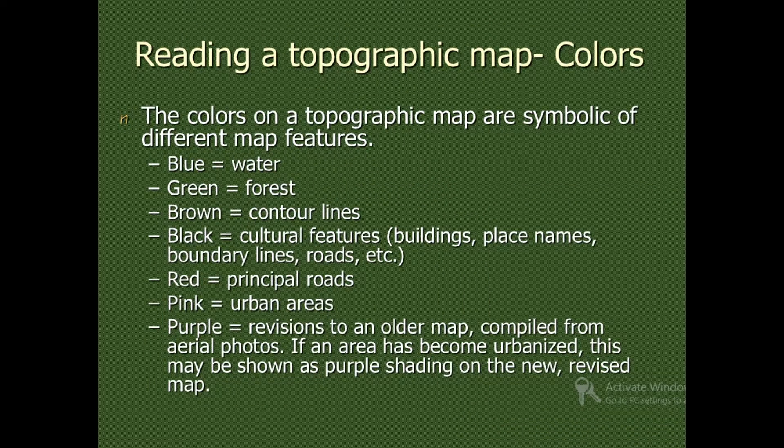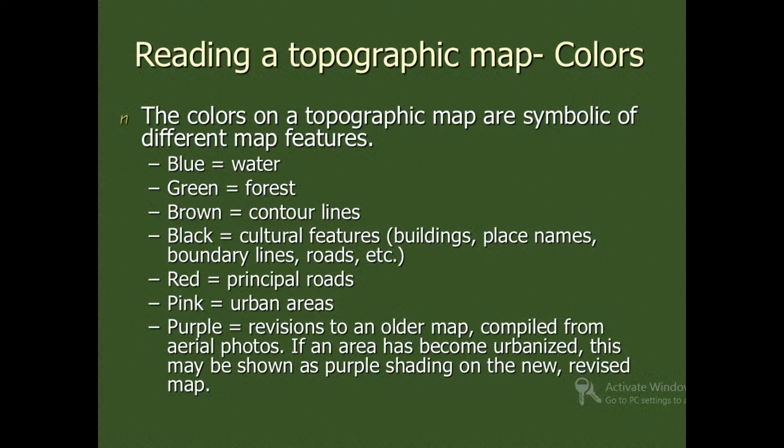Colors: there are different colors in topographic maps. The colors on a topographic map are symbolic of different map features. Blue lines will denote water, green will denote forest, brown will denote contour lines, black will denote cultural features like buildings, place names, boundary lines, roads, etc.